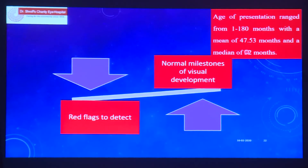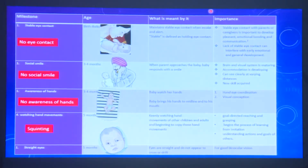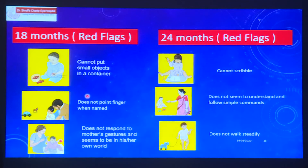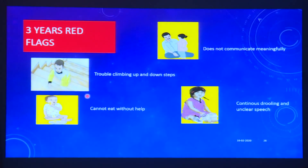Because many children are presenting so late, what are the red flags to detect CVI early? From birth to 8 weeks: no eye contact. At 3 to 4 months: no social smile, no awareness of hands. Squinting at any age. At 6 to 7 months: not reaching out to objects. Not recognising faces by 7 to 8 months. Not putting small things into a container, and not pointing a finger when an object is named. These are the important signs that tell us this child is not able to process visually and should be considered for CVI.